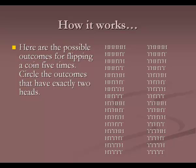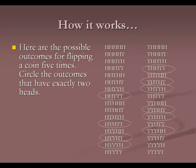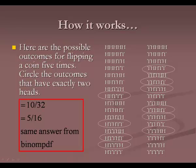All different possibilities when flipping a coin five times are listed out. Circling the outcomes with exactly two heads — these occur ten times out of thirty-two total possibilities. Reducing that fraction gives 5/16, the same answer we got from binomPDF in the calculator. This is why we don't try to do it by hand: you'd have to list the entire sample space and circle the relevant outcomes, which is a pain.